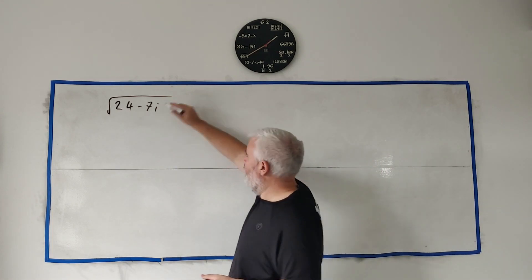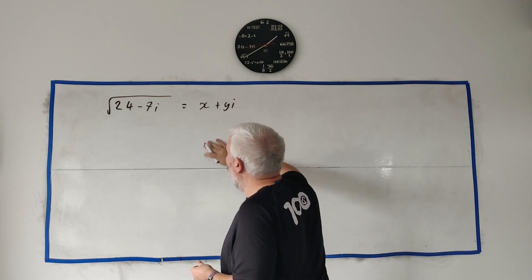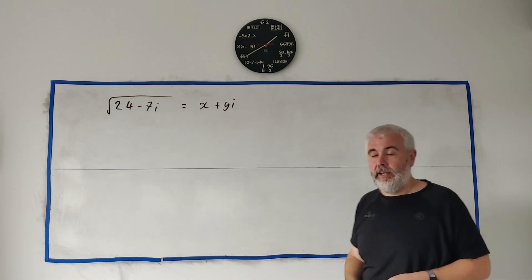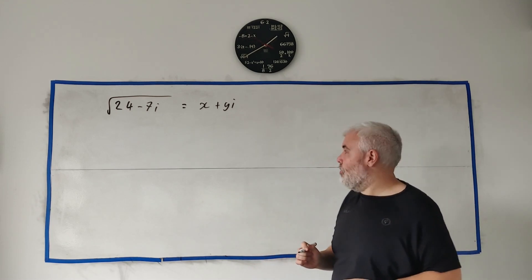We do this question by writing it equal to x plus yi and then simply squaring both sides and trying to solve the real parts to the real parts, the imaginary parts to the imaginary parts.